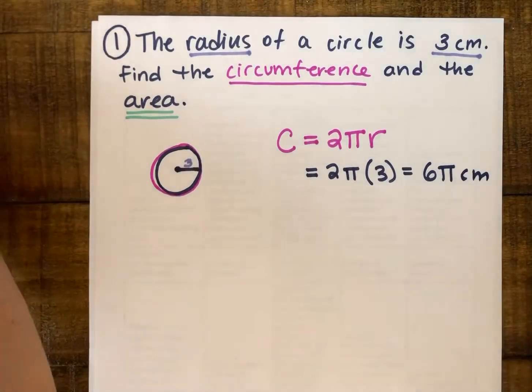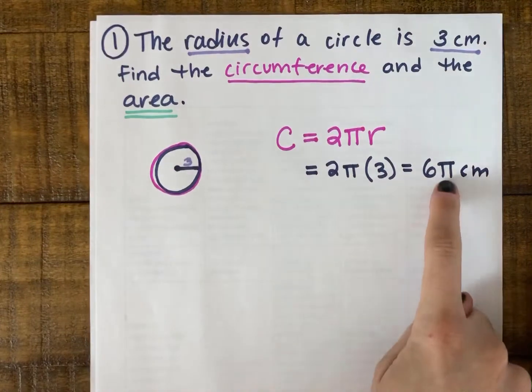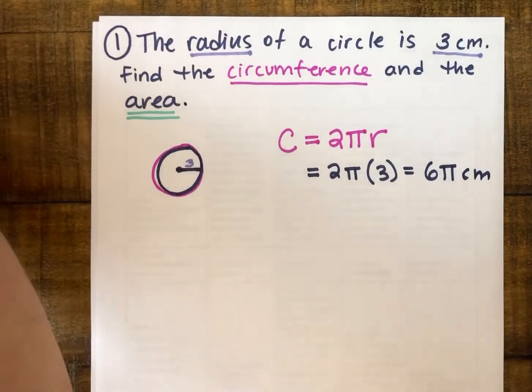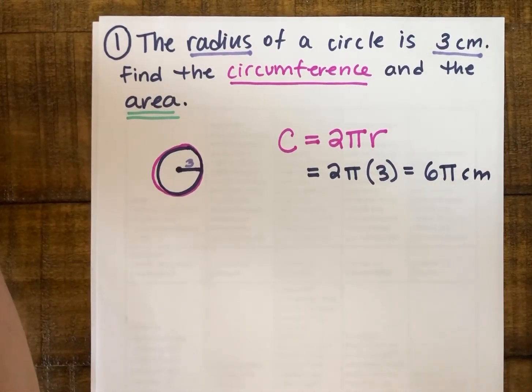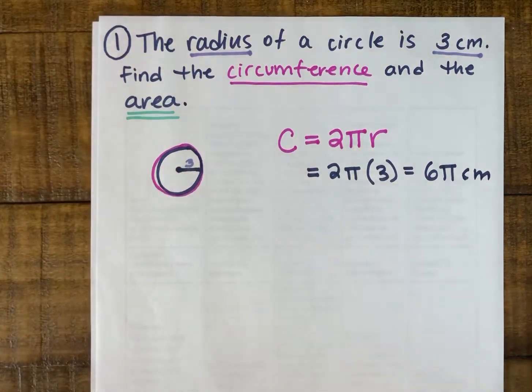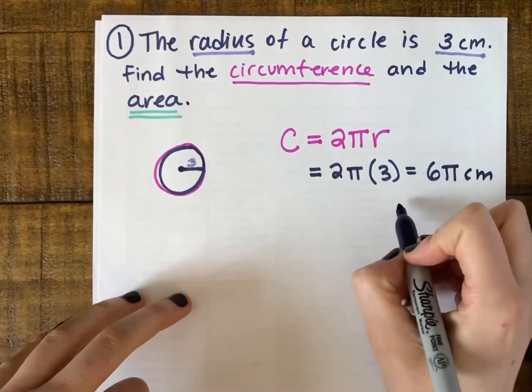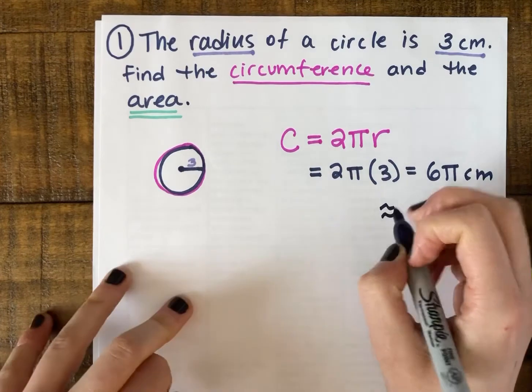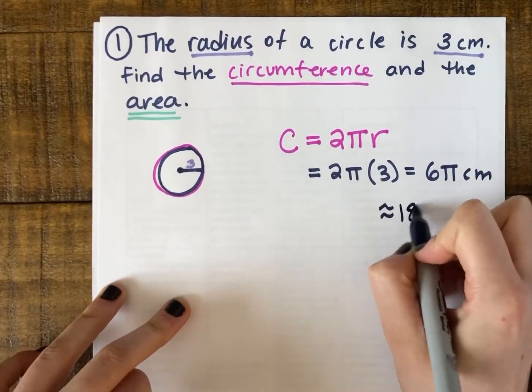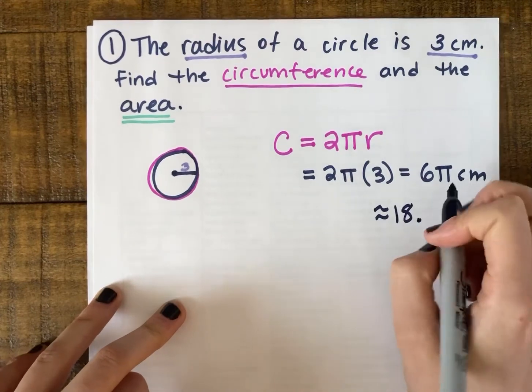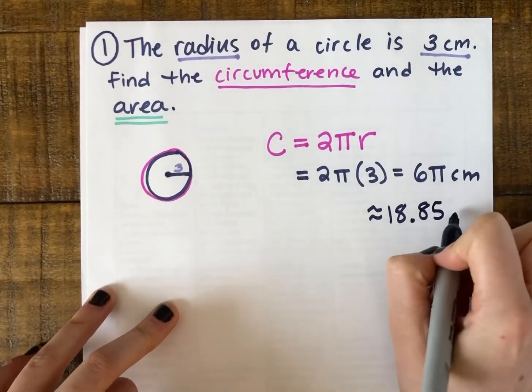That's our exact answer; it has π in it. But I can also find a rounded answer because sometimes we're asked for that. So I would type in my calculator 6 times π, and I would get my circumference is approximately equal to, I'll go to two decimal places, 18.85 centimeters.